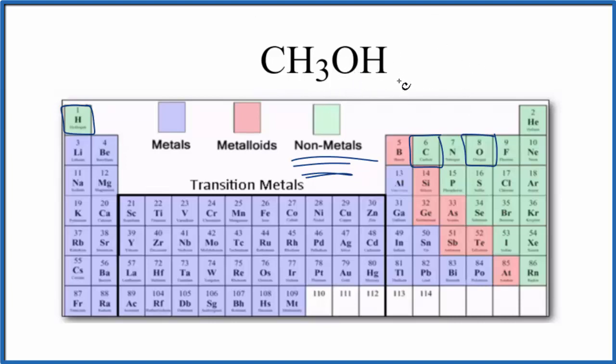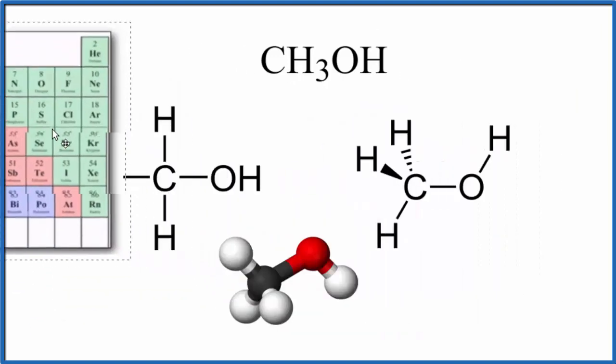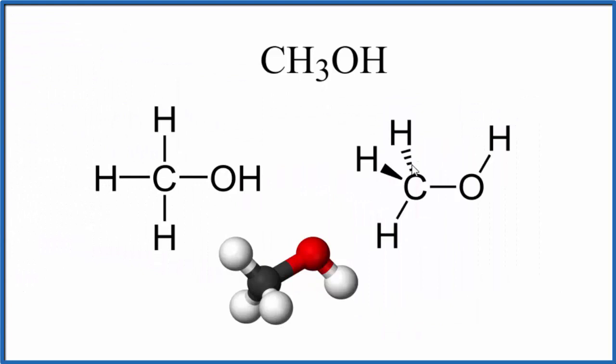Let's take a look at the structure and see what that looks like. So here's a representation, actually three different representations. And you'll note this line here, this line represents a pair of electrons shared between the carbon and the hydrogen.